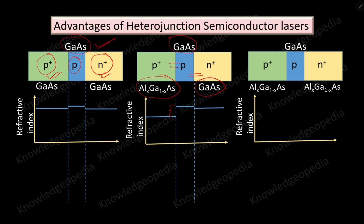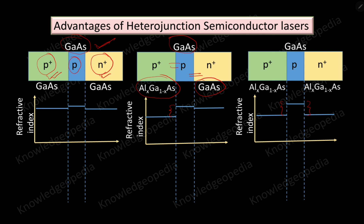In the double heterojunction semiconductor laser, both junctions on either side of the active region are heterojunctions, so there are large differences in refractive indices on both sides. This is the key structural modification because of which we get high-intensity output and very low cavity loss in the double heterojunction semiconductor laser.